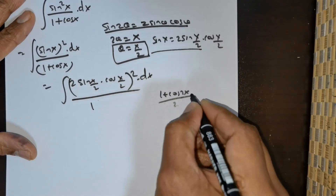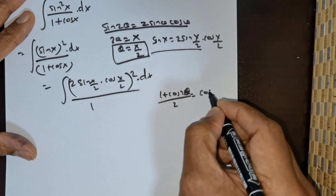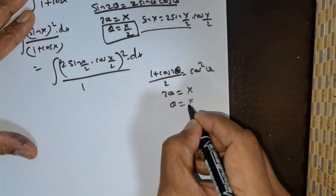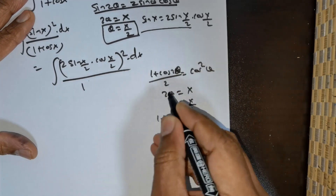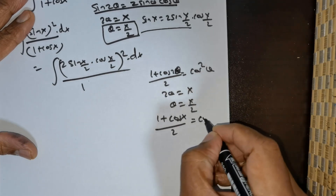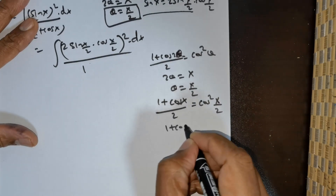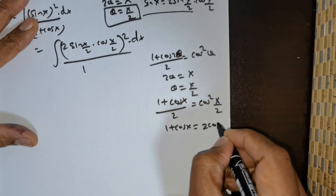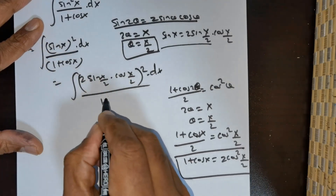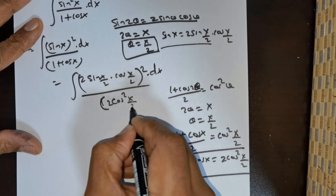Now (1 + cos(2θ))/2 = cos²(θ). If we take 2θ = x, then θ = x/2. Substituting, (1 + cos(x))/2 = cos²(x/2). So 1 + cos(x) = 2·cos²(x/2). Substituting that value here gives 2·cos²(x/2).